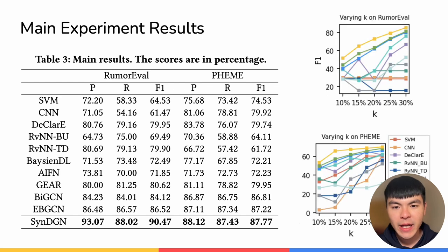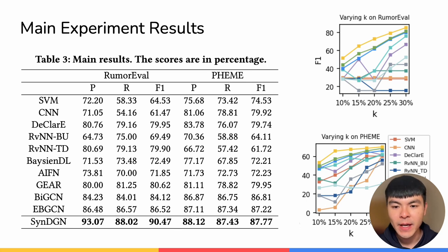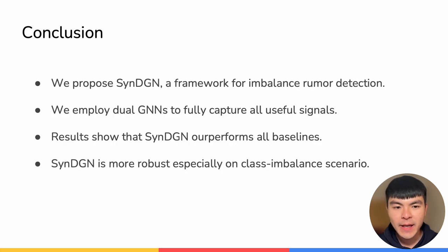We also conduct analysis on the ratio of the rumor class versus non-rumor class. Because in the real world, the rumor class appears much less frequently than the non-rumor class. We show that SynthDGN consistently outperforms all of the baselines regardless of this ratio, showcasing a much more robust system.